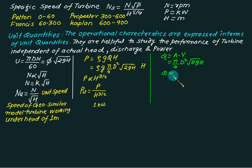So again for symmetrical model, we have q is proportional to root h. Therefore unit discharge qu is given by q upon root h is defined in a similar fashion the flow rate of a geometrically similar turbine under a head of 1 meter.